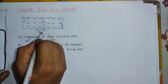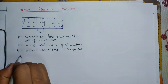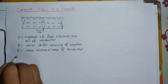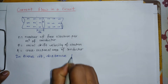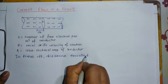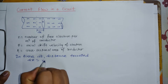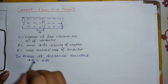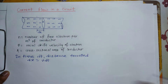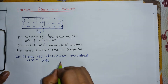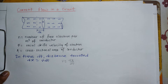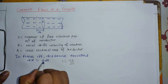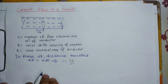We can see the distance traveled by the electron in time dt. The distance traveled is dx = v·dt, where v is equal to dx by dt — change in distance by change in time.